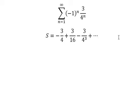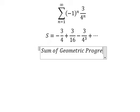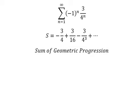In this case we can use the sum of geometric progressions. We can see that a₁, that is negative three over four.